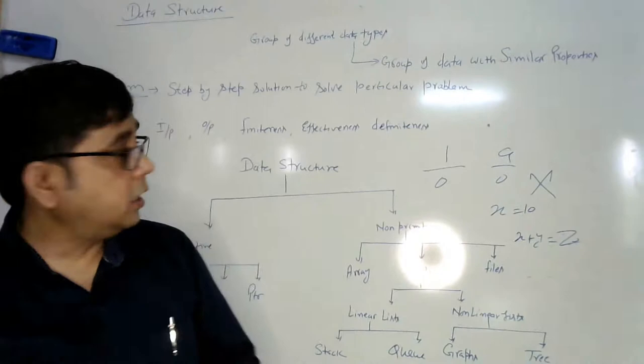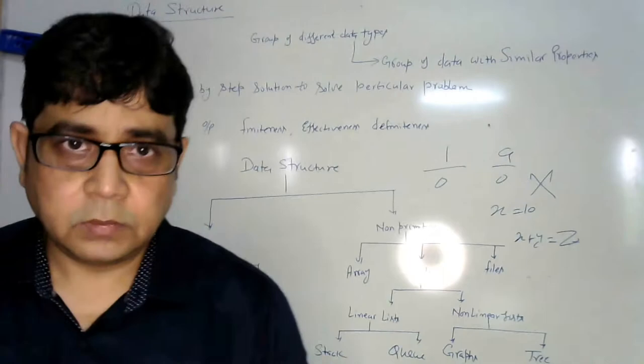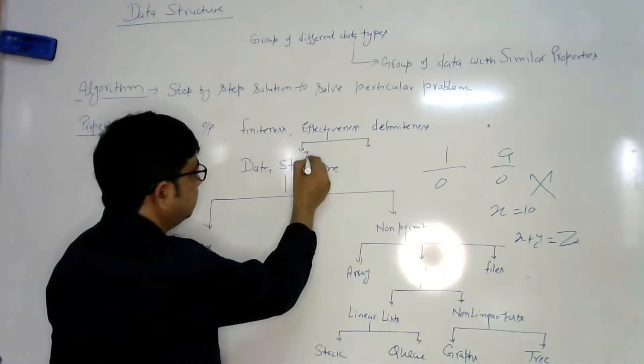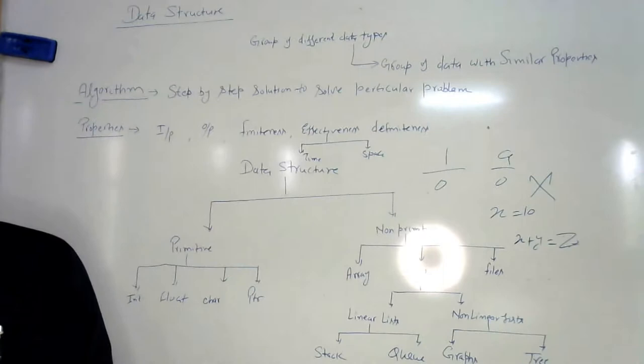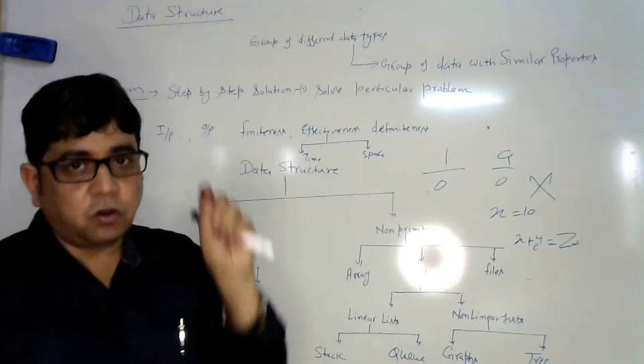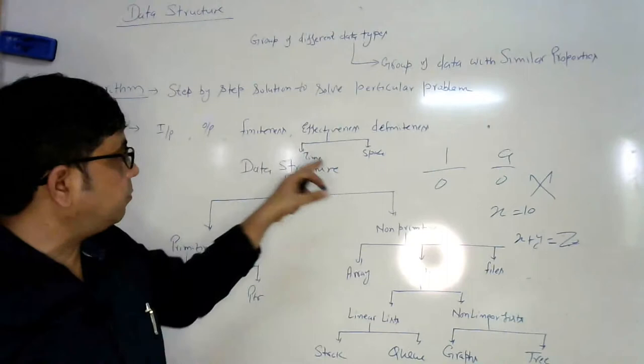Effectiveness, what is the effectiveness of an algorithm? How will you measure the effectiveness of the algorithm? There are two things that are measured for measuring the effectiveness of an algorithm. That is time and space. This time and space is called complexity of an algorithm. Whenever we are going to define the effectiveness of an algorithm, we will measure the time requirement for the execution of that algorithm in the memory and space requirement to store that program, that process in the memory. Storage and time is its complexity.